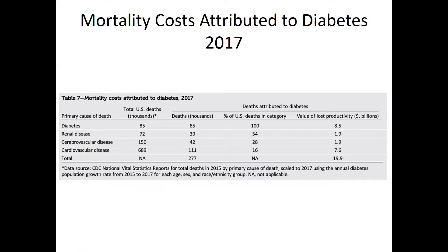On mortality costs, looking at the percentage of deaths attributable to various diseases in people with diabetes: 54% of cases don't have renal disease listed, 25% to 28% have cerebrovascular disease, and 16% have cardiovascular disease — all important contributors.